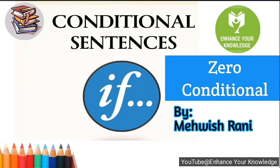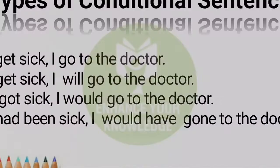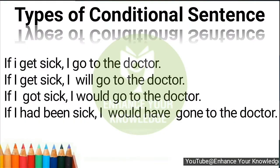Before moving towards types, let's have a look at these sentences: 'If I get sick, I go to the doctor.' 'If I get sick, I will go to the doctor.' 'If I got sick, I would go to the doctor.' 'If I had been sick, I would have gone to the doctor.'